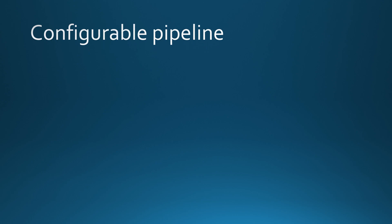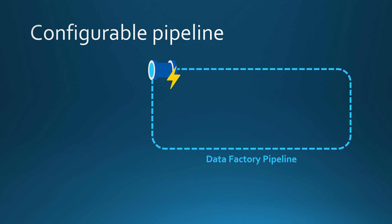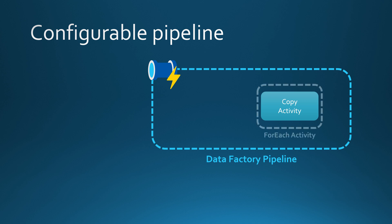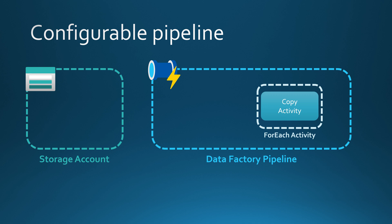Let's go to the presentation and see what we are going to build today. We're going to build a configurable pipeline. In this setup, we are going to have a Data Factory pipeline containing a copy activity. This copy activity will perform binary copies from blob storage back to that same blob storage. The copy activity is wrapped inside a ForEach activity, making it dynamic. However, today we are not going to pass instructions for the ForEach activity using Data Factory parameters. Instead, we are going to have a storage account with a configuration file containing all the necessary instructions for the copy activity.